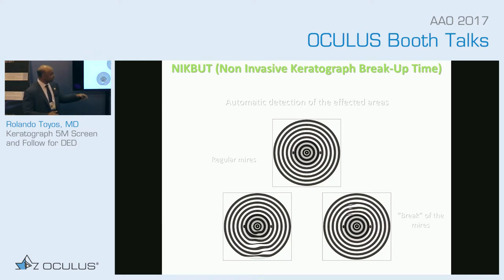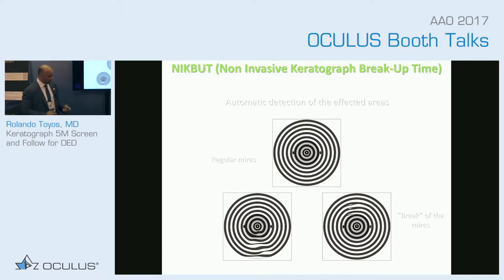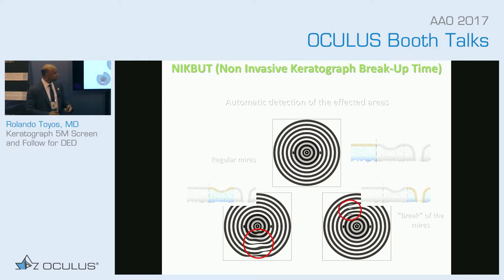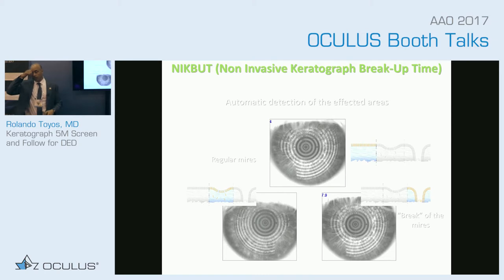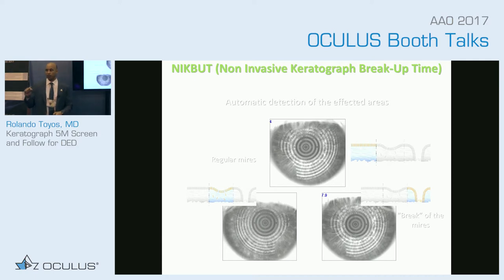Tear breakup time shows you'll have regular Mires, but once that tear film starts to break down, you're going to get abnormal Mires — and that's how it measures tear breakup time. You can see normal Mires and then the Mires start to break down. The non-invasive tear breakup time is more sensitive than your normal fluorescein tear breakup time.